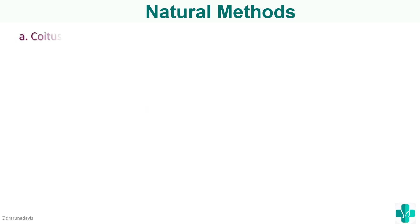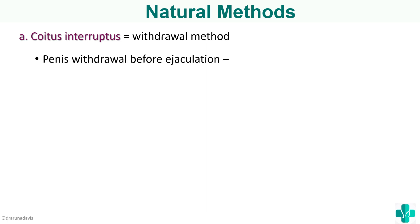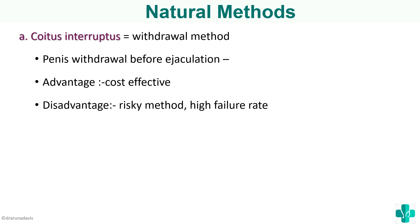The first natural method is coitus interruptus, or the withdrawal method. Basically, the penis is withdrawn before ejaculation. The advantage is that it is very cost-effective with zero costs involved, but the disadvantage is that it is a very risky method with a high failure rate. So this is not a very good contraceptive method.